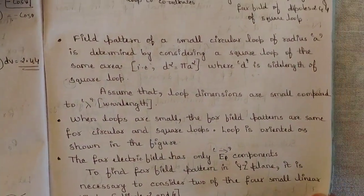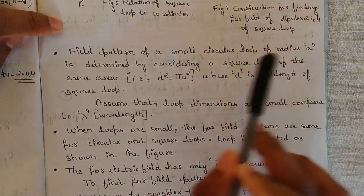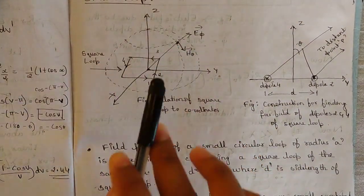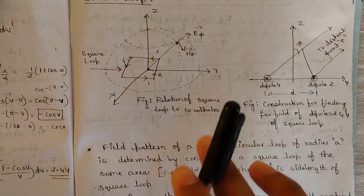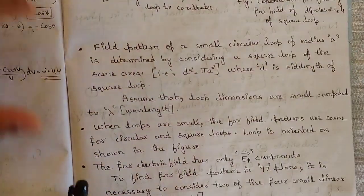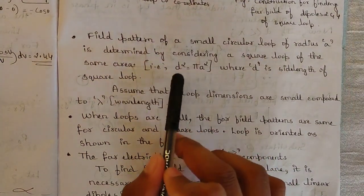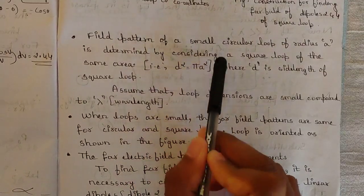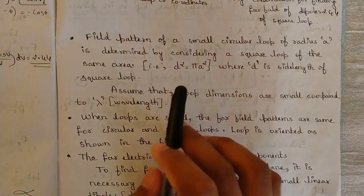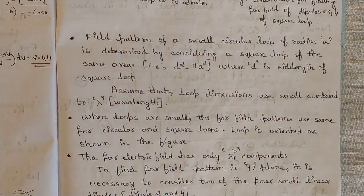The field pattern of a small circular loop of radius A is determined by considering a square loop of the same area. In the far field zone it is a small circular loop, and in the Fresnel near field zone it is determined with respect to the square loop at the origin. Therefore it is determined by considering a square loop of the same area, where D squared equals pi A squared — D is the side length of the square loop and A is the radius of the circular loop.